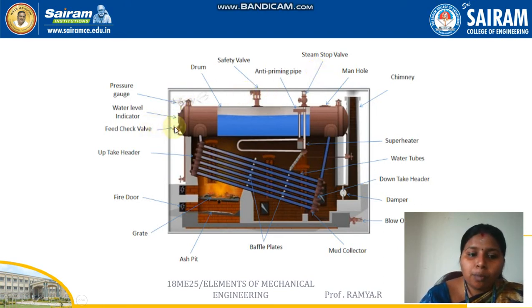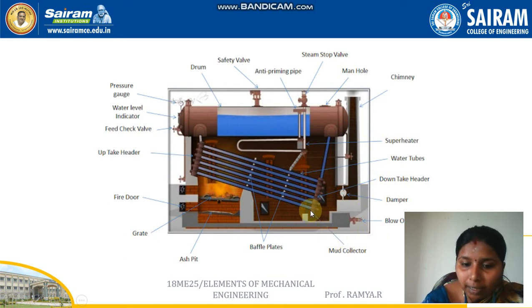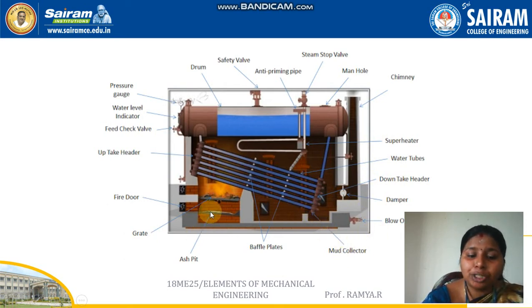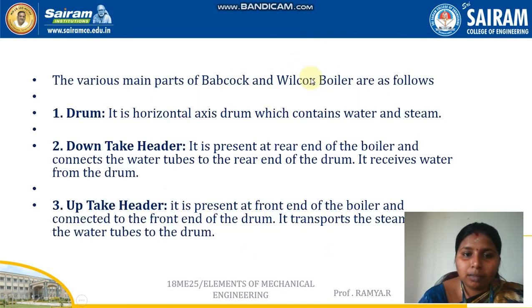The major components of a Babcock and Wilcox boiler include: a steam stop valve, safety valve, feed check valve, uptake header, superheater, water tubes, downtake header, damper, blow-off valve, mud collector, baffle plates, and ash pit.